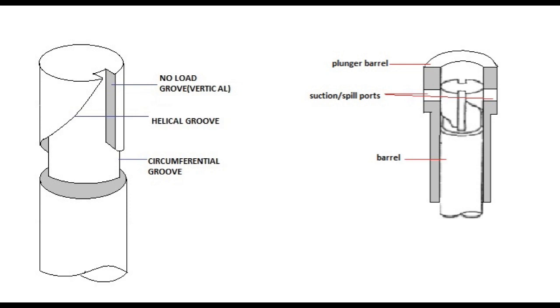The top part of the plunger is machined to form helical, vertical and circumferential grooves as shown. The barrel has two ports drilled in it which will line up with the fuel supply to the pump.